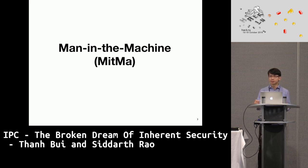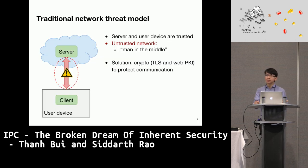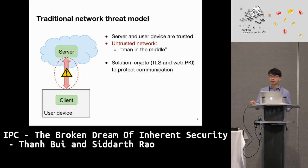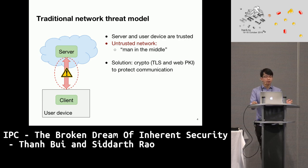Let us understand the Man-in-the-Machine threat model. We see software with client-server architecture everywhere. Take the browser and the web server for example. In the traditional network threat model, the user device and the server are typically trusted but the network is hostile. An attacker can do various types of attacks such as man-in-the-middle to steal data exchanged over the internet. Since we are aware of such attacks, we use cryptographic solutions such as PKI and TLS to protect the communication.